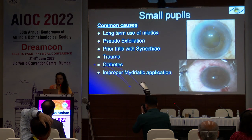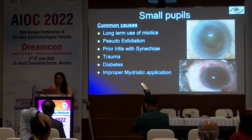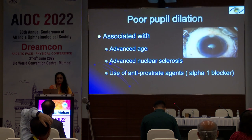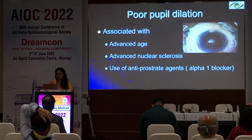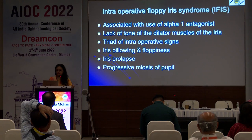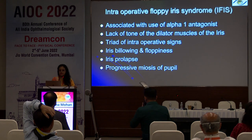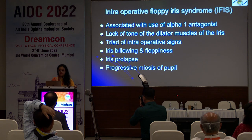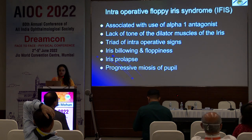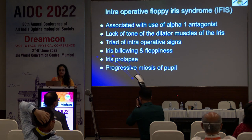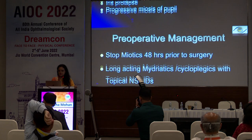The causes for small pupils are long-term use of miotics, pseudo-exfoliation, prior uveitis, synechiae, trauma, diabetes, or just poor mydriatic application. It is associated with advanced nucleus sclerosis. There is a specific condition called intraoperative floppy iris syndrome, which has a triad of intraoperative signs: iris billowing and floppiness, iris prolapse, and progressive miosis of the pupil. This happens due to lack of tone of the dilator muscles of the iris.